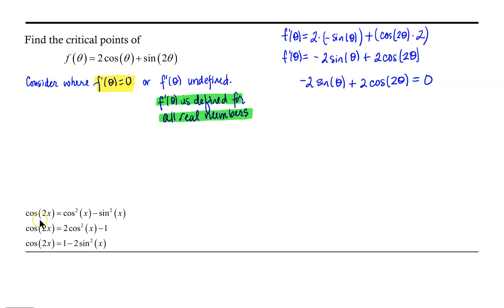We have a couple of options for cosine of 2x. Cosine of 2 theta could be rewritten as cosine squared theta minus sine squared theta, but that still leaves a mix of sines and cosines. We could replace it with 2 cosine squared theta minus 1, but again that gives us a mix. The best option is to replace cosine of 2 theta with 1 minus 2 sine squared theta, so our equation will involve only sine of theta.